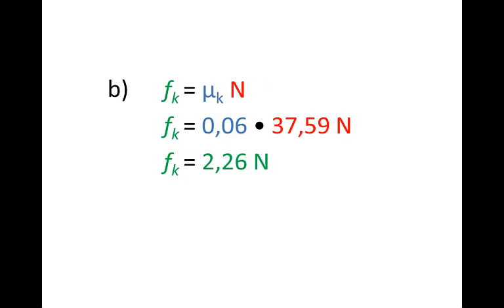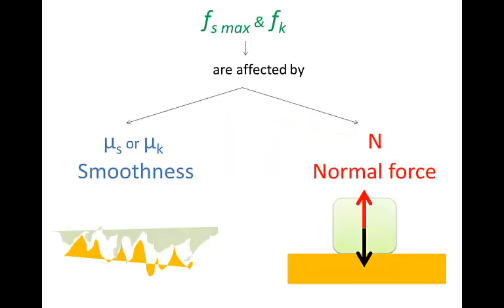Notice that these answers are both less than question 1's answers were, even though the object is 4 kg in both question 1 and question 2. And there are two reasons for this. In question 2, the surfaces were both smoother, decreasing friction. And in question 2, normal force was less because the object was on an inclined plane.